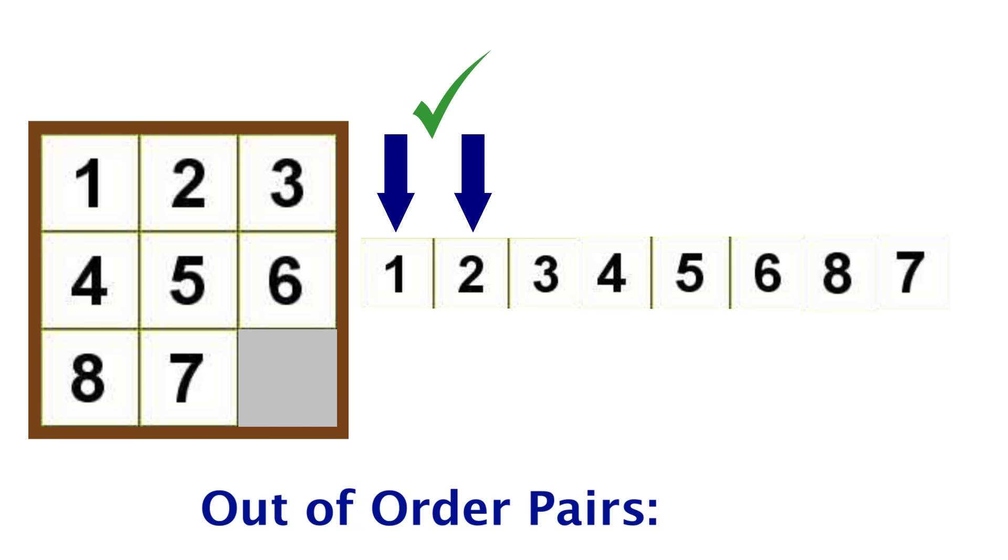The 1 and the 2 are in order, because 1 comes before 2 as it should. 1 and 3 are good, even 1 and 8 are good, because 1 comes before 8 numerically, as it does here. In fact, every pair of numbers is in relative order, except 7 and 8. Thus we have one pair out of order.